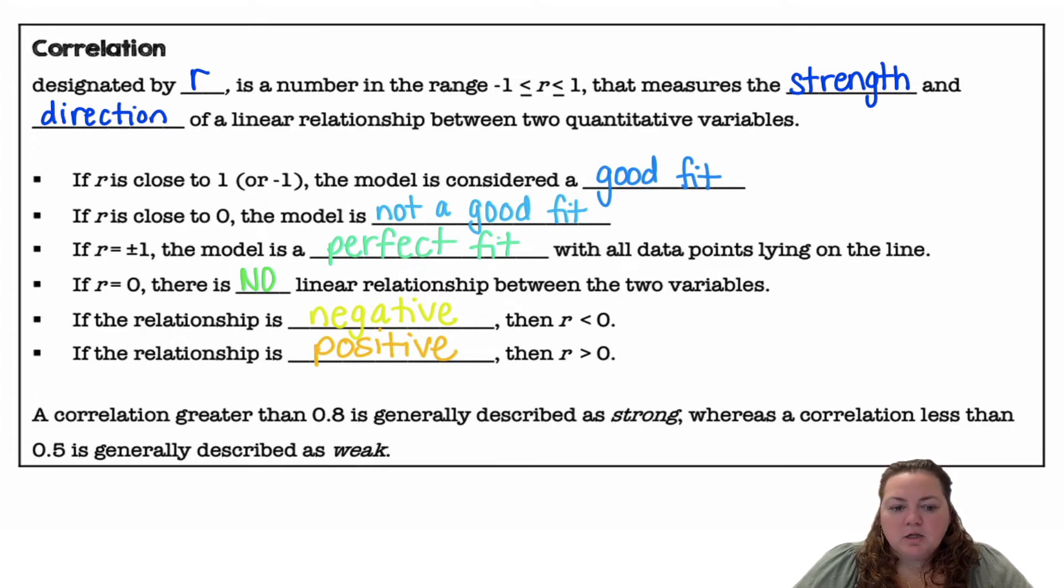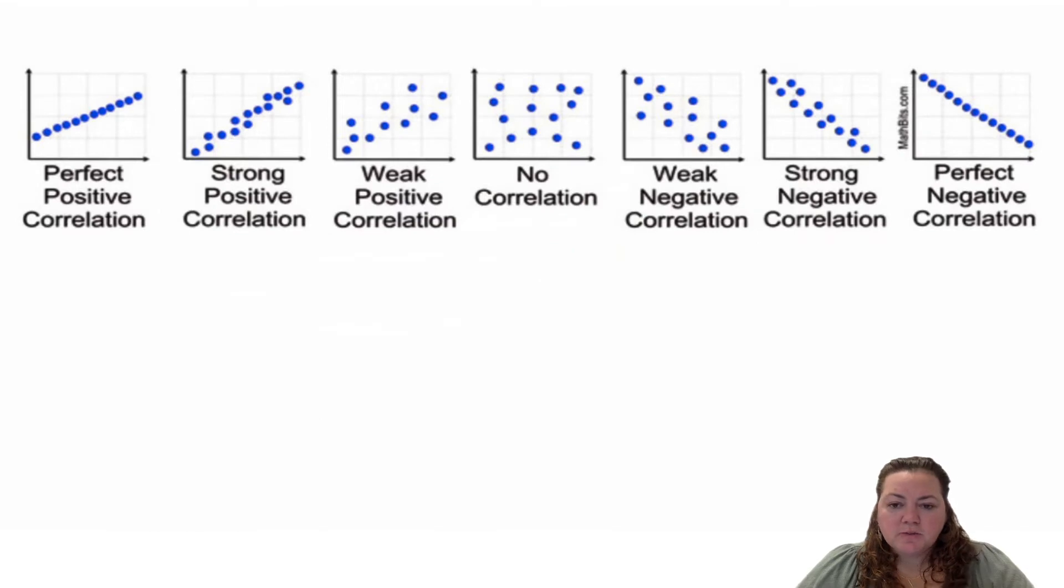Okay, so there's not super specific rules but here's what visually they look like. So perfect positive correlation, a strong positive correlation, a weak negative correlation,